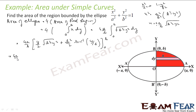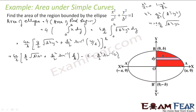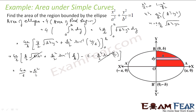Substituting the limits: at y = b, √(b² − b²) = 0 and sin⁻¹(1) = π/2; at y = 0, sin⁻¹(0) = 0. So we are left with 4a/b × (b²/2 × π/2), which simplifies to πab — and that is our answer. As you can see from both cases we got the same answer.